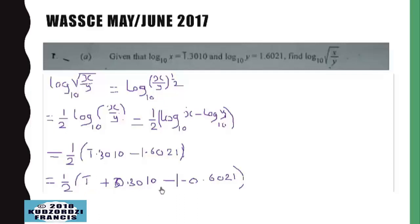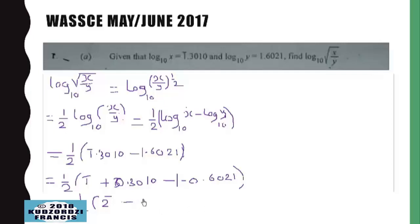We group the terms. The two characteristics give us bar 2, and the mantissa terms — 0.3010 minus 0.6021 — give us negative 0.3011. So we have one over two multiplied by bar 2 minus 0.3011.